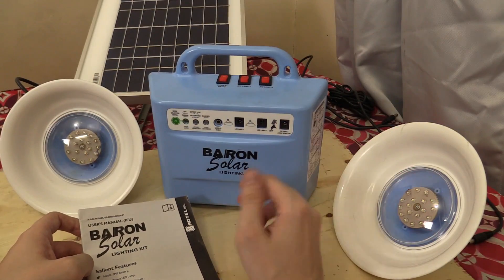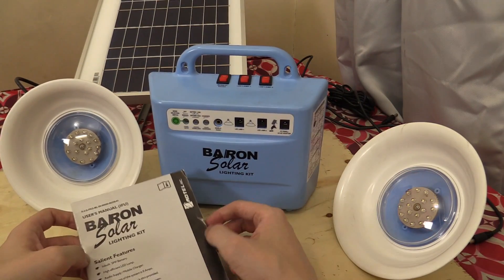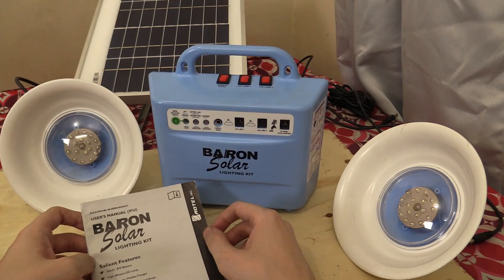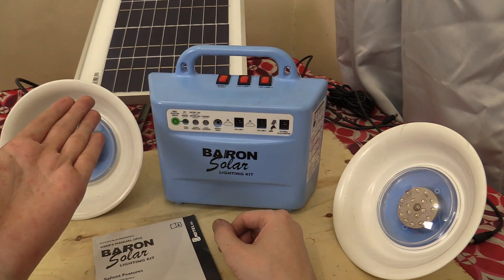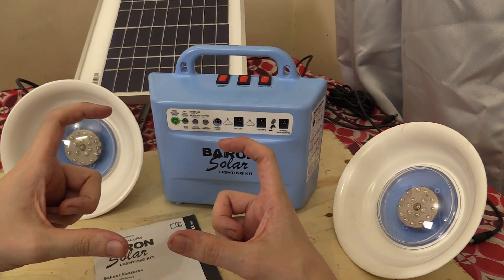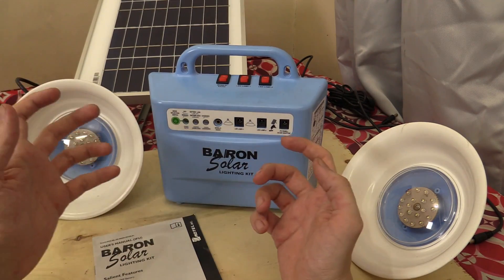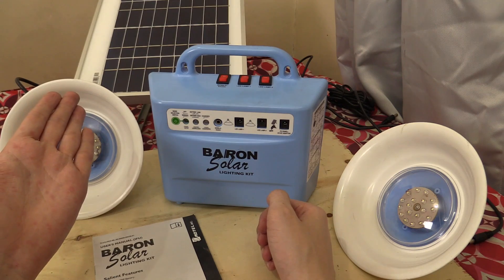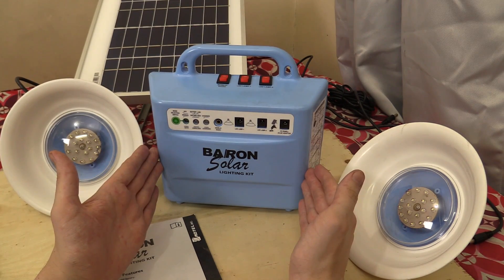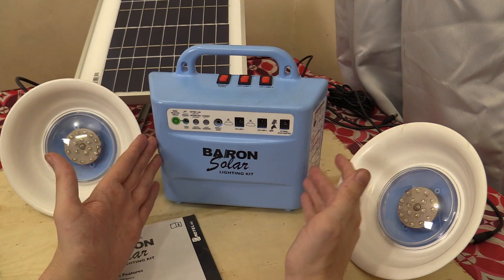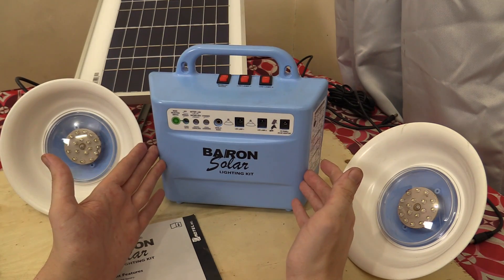So I think that pretty much sums up the Baron Solar Kit. At 3,500 pesos, it's not the cheapest kit on the market. But there's a reason for that. Look at the size of the solar panel. That's 10 watts. It's not like one of those really small solar panels which is going to take like a week to charge a battery. That's a decent-sized panel. Then look at the battery. 12-volt, 7.2 amp-hour. Not only is that good capacity, but it's easily replaceable in the future.